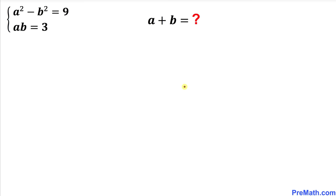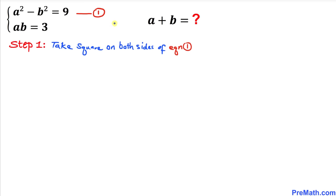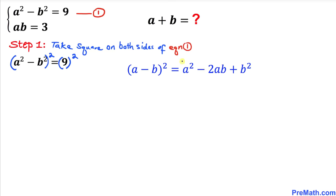Let's get started with the solution. We'll call this first equation as equation number 1. Now let's take the square on both sides of equation 1. We are going to recall the famous identity for (a minus b) squared and use it to expand this binomial.